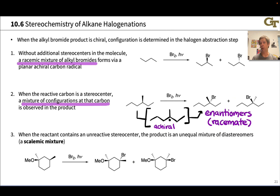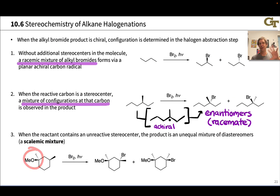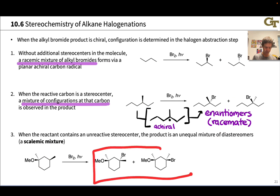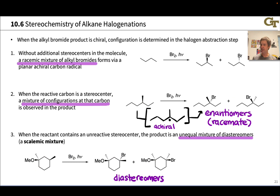When the reactant contains an unreactive stereocenter, we get an unequal mixture of diastereomers. In this example, we've got two stereocenters in the reactant. Reaction is going to occur at the tertiary position, going through a carbon radical that is flat at the radical center but has a stereocenter elsewhere in the molecule. We get a mixture of the two products with different configurations where reaction occurred, but the same configuration at the methoxy-bearing stereocenter. These two compounds are related as diastereomers, so we get an unequal mixture — known as a scalemic mixture, an analogous term to racemic.